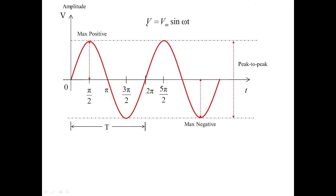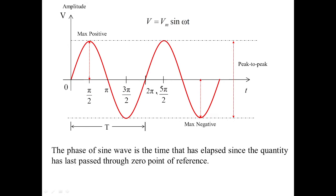We have designated V as the instantaneous value, and Vm as the maximum value which can be positive Vm or negative Vm, and sin(ωt) where ωt ranges from 0 to T. Sometimes ωt is replaced by θ (theta), so either you can have it in radians or in degrees. This is called the phase — when it is starting from 0 and going to terminate at some particular point. Technically, the phase of a sine wave is the time that has elapsed since the quantity last passed through the zero point of reference.